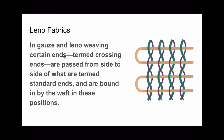To define it: in lino weaving, certain ends termed as crossing ends are passed from side to side of what are termed as standard ends, and are bound in by the weft in these positions.